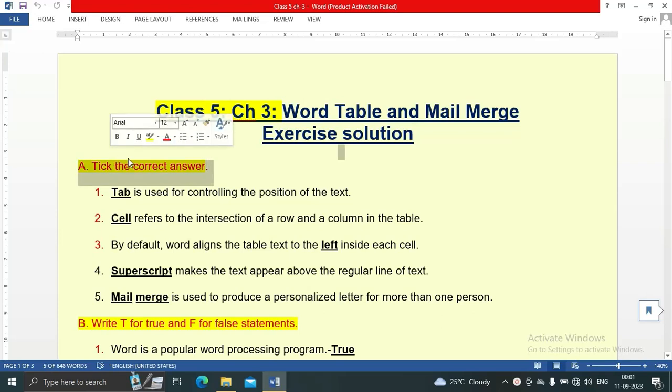Question 1: Pick the correct answer. Tab is used for controlling the position of the text. Cell refers to the intersection of a row and column in the table.